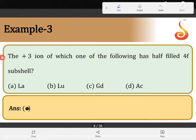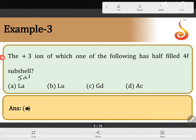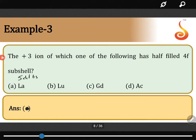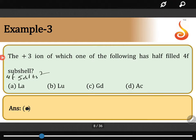Lanthanum basically is a 5D element, the first element of the 5D series, which has a valence electronic configuration 5D1, 6S2. So it does not contain 4F electrons at all, therefore this cannot be the option.